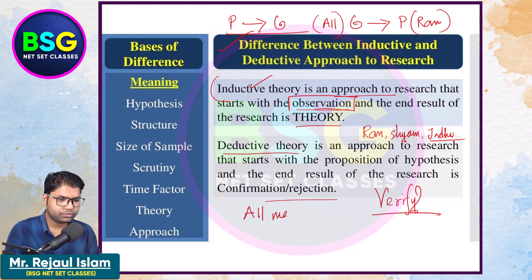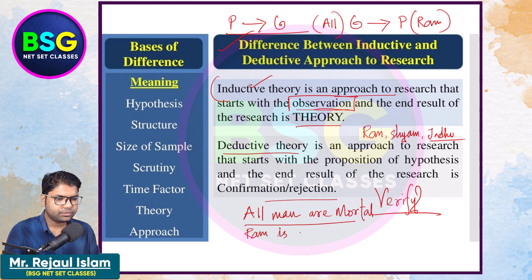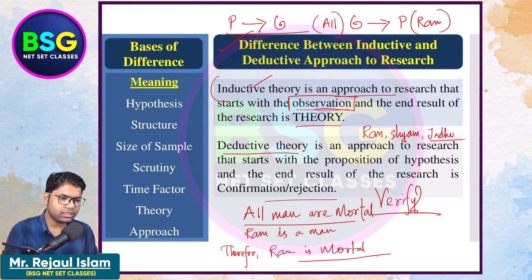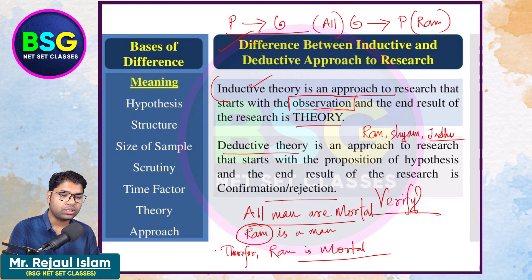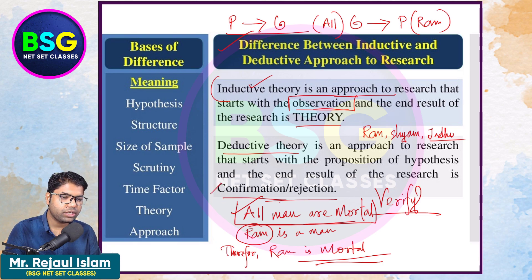All men are mortal — this is a general theory, all men are applicable. Ram is a man, therefore Ram is mortal. If we confirm the hypothesis, then we accept it. If we confirm that it is not true, then we reject it. This is the basic research for the inductive and deductive approach.